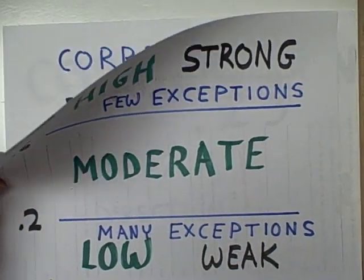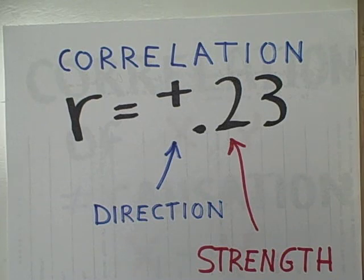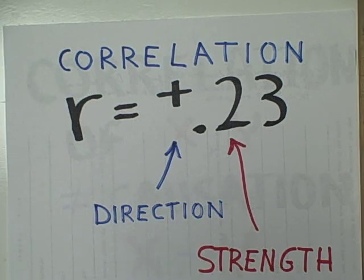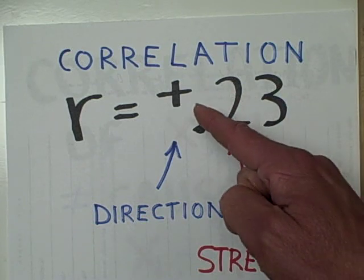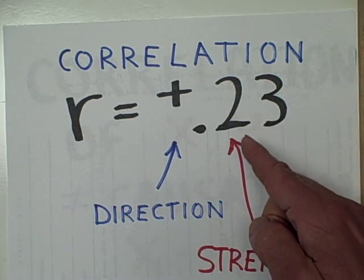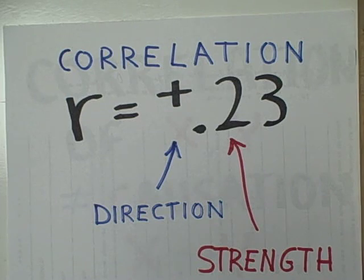When we calculate a correlation coefficient, here symbolized by the letter R, we get a decimal number usually rounded off to the hundredths place. We are going to look at two different things in this correlation coefficient: the sign in front of the decimal point, and the digit immediately to the right of the decimal point. These two indicators tell us the direction of the correlation and its strength. The positive or negative sign tells us if the correlation is direct or inverse. If the correlation does not have a sign, we assume it is a positive direct relationship. Then we look at the digit in the tenths place to assess strength.